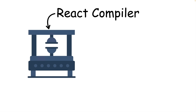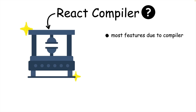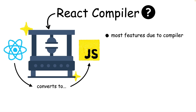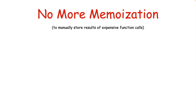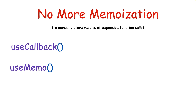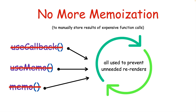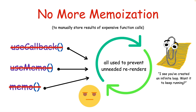The biggest part of this new version is the React compiler. Most of the features in React 19 are due to the compiler. The React compiler will convert your React code into regular JavaScript. The main benefit is to improve your overall app performance. But what's even better is that it removes the need to think as much about performance — that means you no longer have to use manual memoization tools like useCallback, useMemo, and memo. These tools were necessary to prevent unnecessary re-renders, but they are hard to use properly, even with React reminding you to use them in the console.